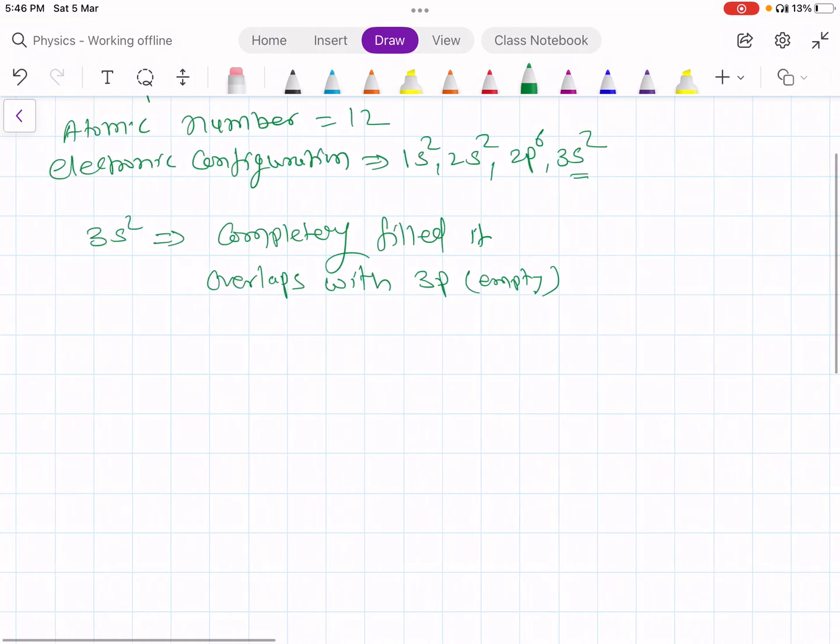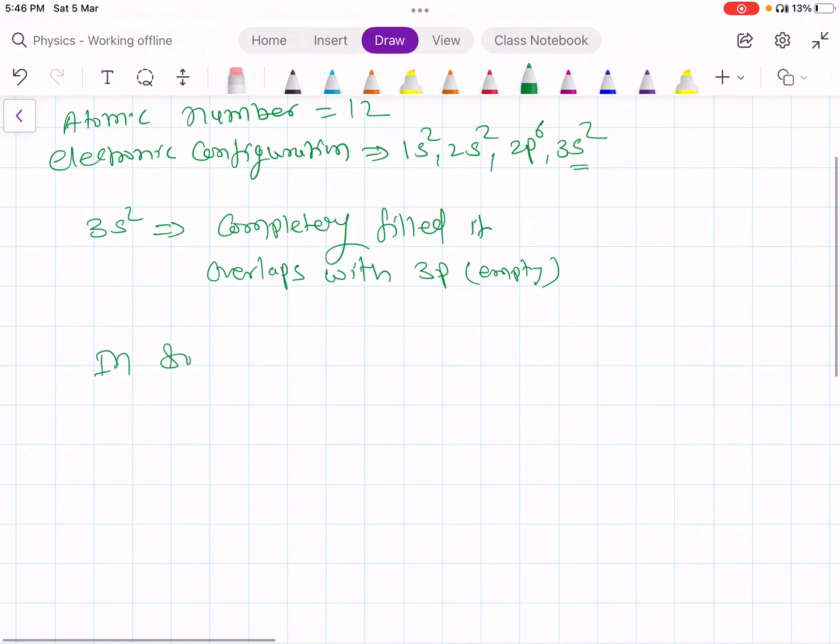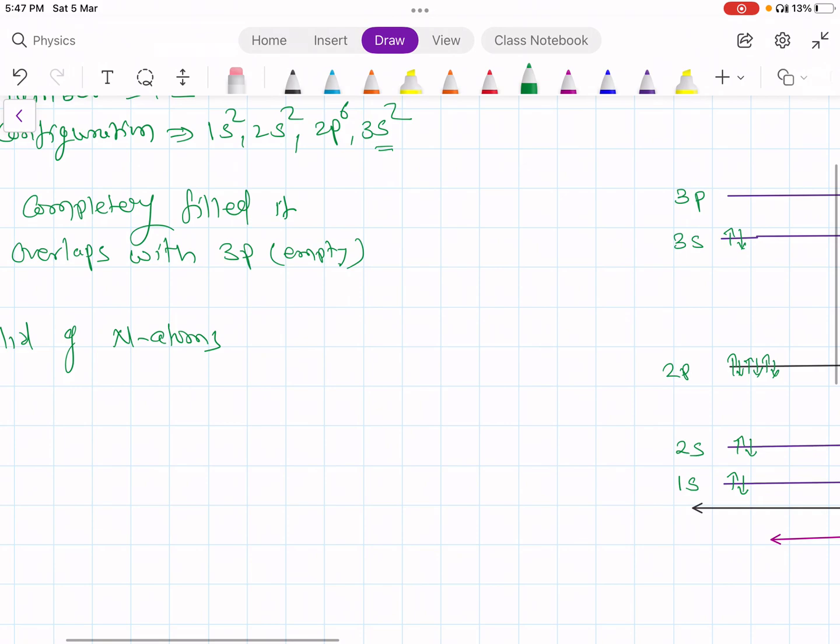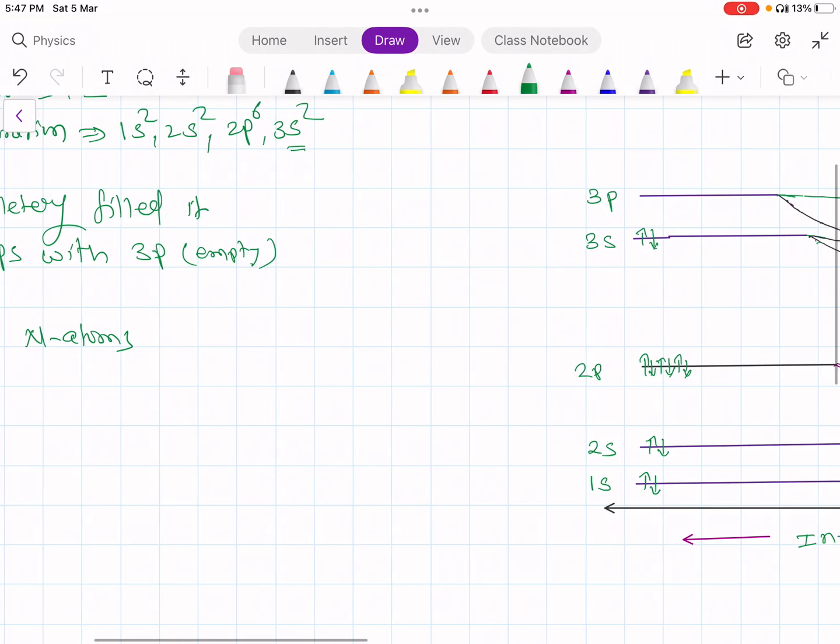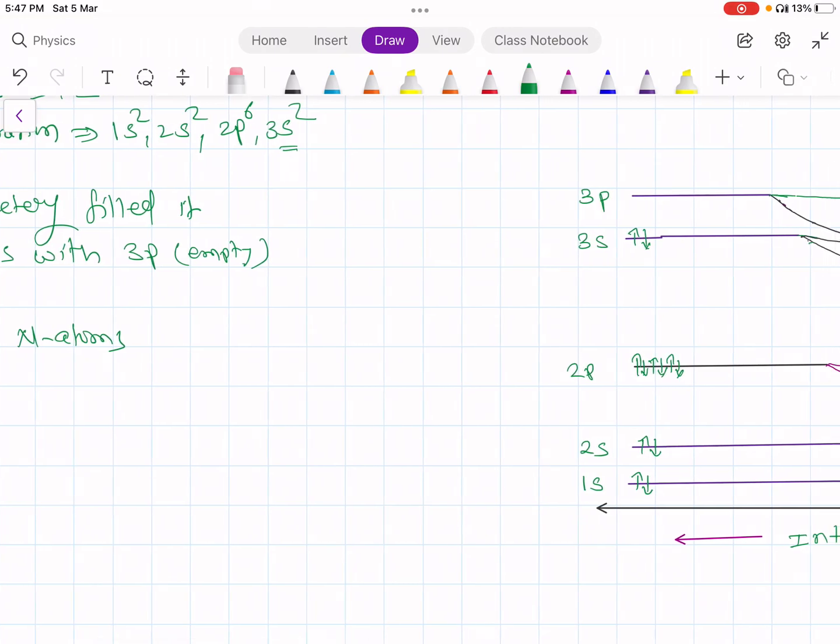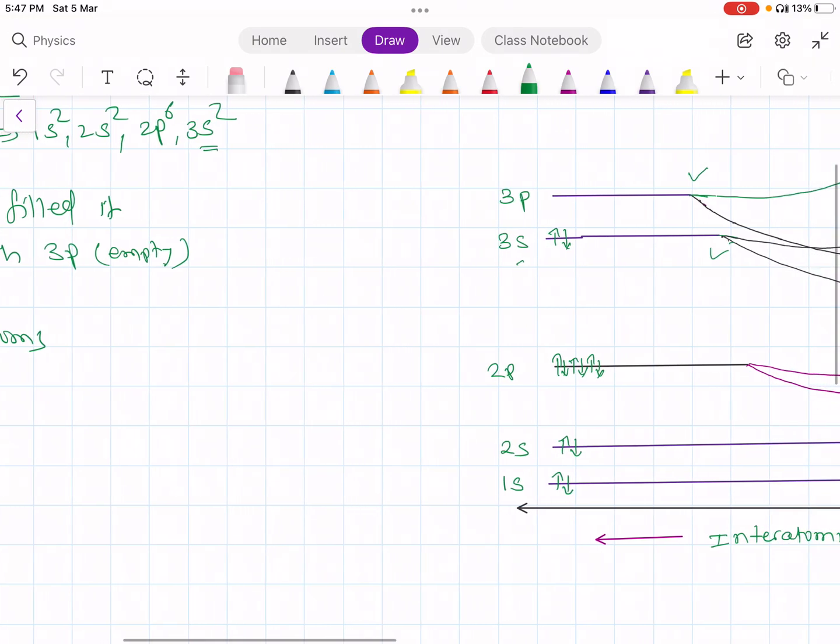Then in a solid of n atoms, we are bringing n number of atoms together so that it forms solids. When this interatomic distance between the atoms decreases, outermost energy level is 3p. So here 3p will start first splitting. Since this 3s is shielded by 3p, later on 3s will start splitting. If you decrease interatomic distance further, then the 2p will start splitting.